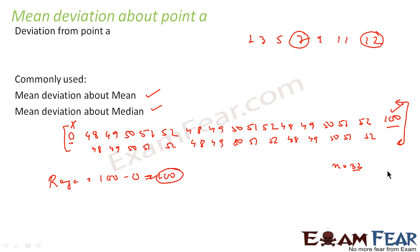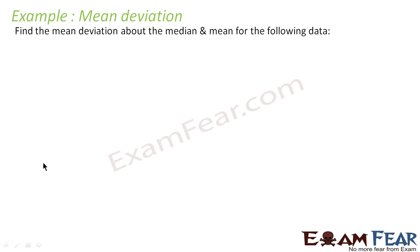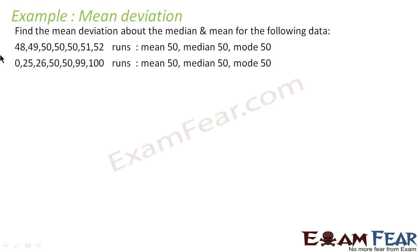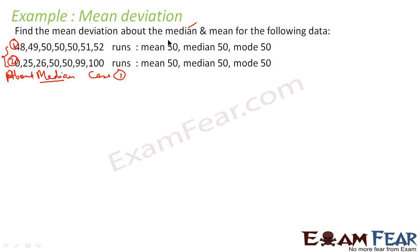Mean deviation is nothing but deviation from a point A. We find the deviation from point A and then take the mean. Commonly used mean deviations are mean deviation about mean or mean deviation about median. Let me explain using the same data. In Case 1, we find mean deviation about median. First we need to know the median, and here the median is 50.